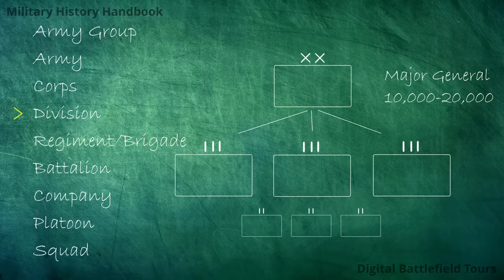Divisions are usually made up of multiple regiments of different arms. An infantry division usually contains around three infantry regiments and a fourth artillery regiment, as well as battalions of smaller arms such as an engineer battalion, a reconnaissance battalion, and an anti-tank battalion. An armored division has a mix of tank regiments, infantry regiments, and artillery regiments, making it even more of a combined arms force. A division numbers often over 10,000 men, sometimes closer to 20,000, and is usually commanded by a major general.